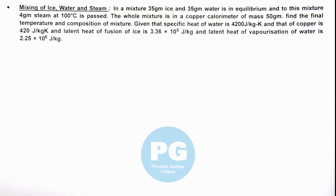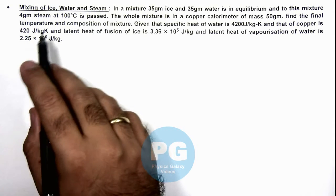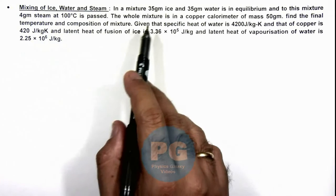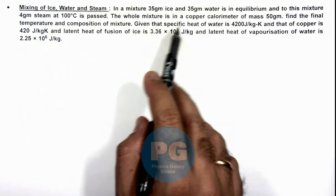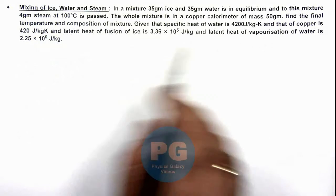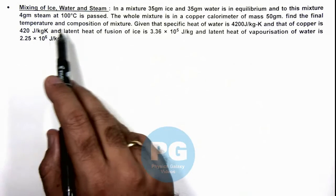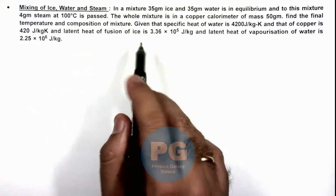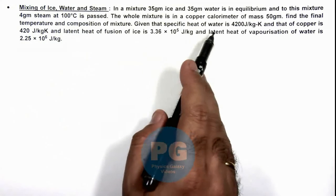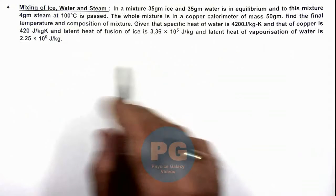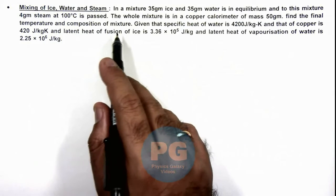In this illustration, we'll discuss the mixing of ice, water, and steam. We are given that in a mixture, 35 gram ice and 35 gram water is in equilibrium. To this mixture, 4 gram steam at 100 degree centigrade is passed. We are required to find the final temperature and composition of the mixture.